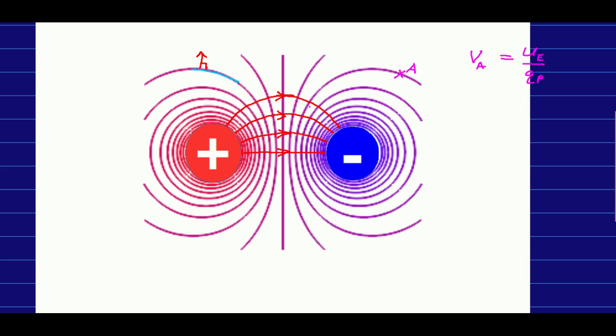And we know the field points from the positive charge towards the negative charge, and so the field is pointing downhill, or in other words, from regions of high electric potential towards regions of low electric potential.